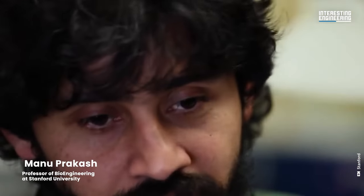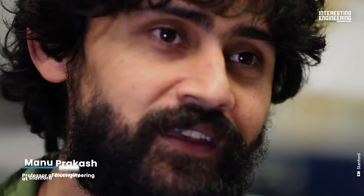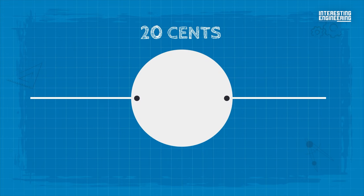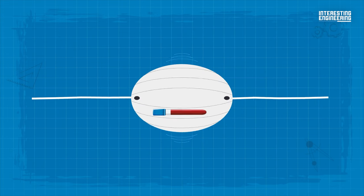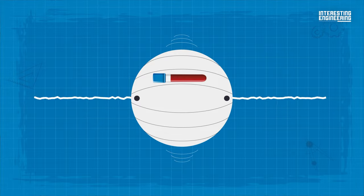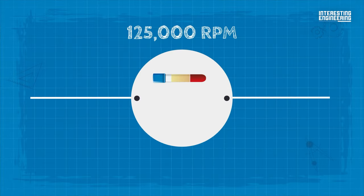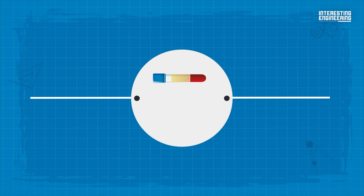This is a tool that requires no electricity, no infrastructure. You can carry them around in your pockets for a price point of 20 cents. Built from 20 cents of paper, twine, and plastic, this paper centrifuge can spin at speeds of 125,000 RPM and exert centrifugal forces of 30,000 Gs.